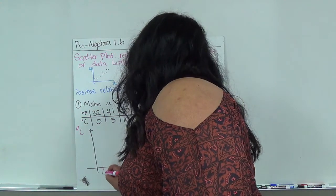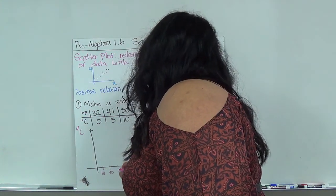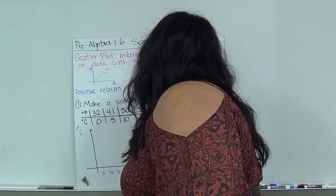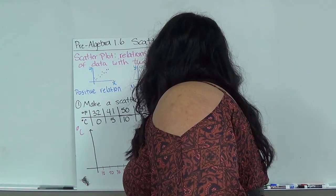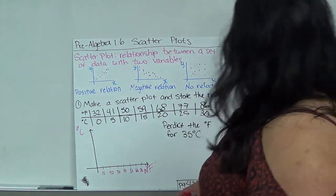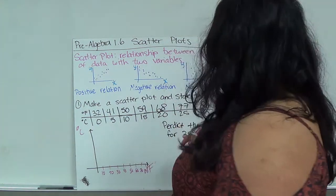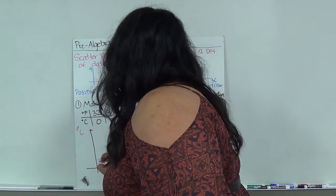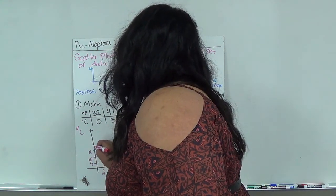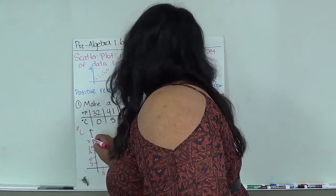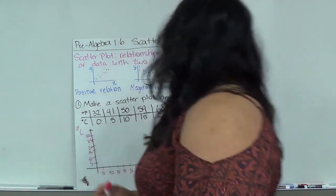So we're gonna go by 10: 20, 30, 40, 50, 60, 70, 80. And then the C it goes from 0 to 30, that's easy, we'll go by 5s: 5, 10, 15, 20, 25, 30.